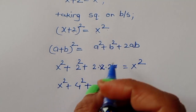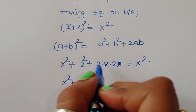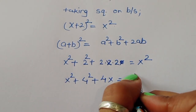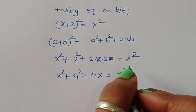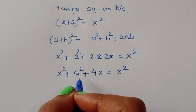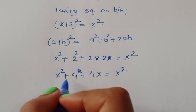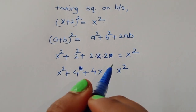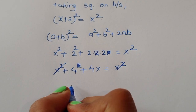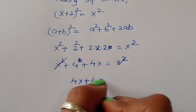So we get x² + 4 + 2 times x times 2, which gives 4x, equal to x². So we can write: x² + 4 + 4x is equal to x². Now x² cancels from both sides, so it becomes 4x + 4 is equal to 0.